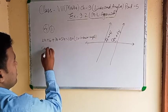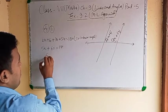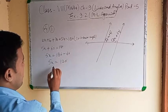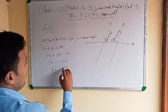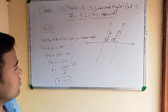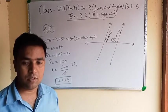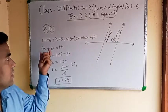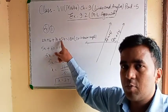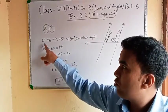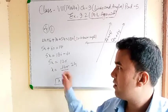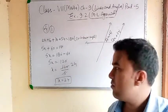Since they are co-interior angles: 2x plus 6 plus 3x plus 54 equals 180 degrees. Combining: 5x plus 60 equals 180. Then 5x equals 180 minus 60, so 5x equals 120. Therefore x equals 120 divided by 5, which gives x equal to 24.